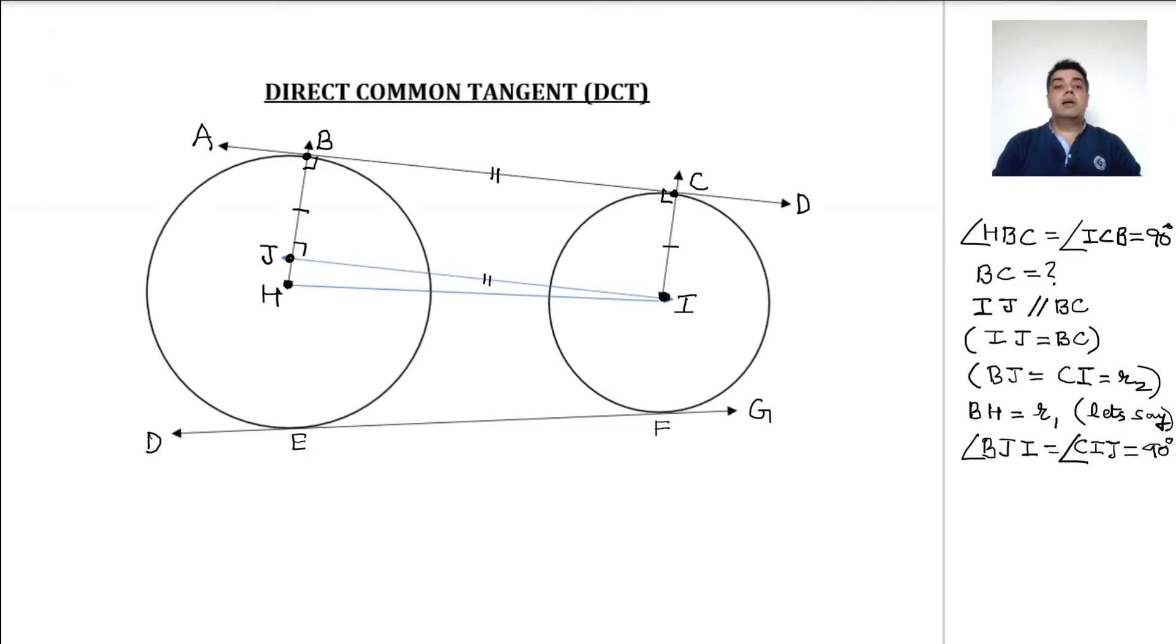Henceforth, the quadrilateral that is formed, which is BCIJ, becomes a quadrilateral which is also known as a rectangle in this case. Can I put this as 90 degrees? Of course. So now using Pythagoras theorem.